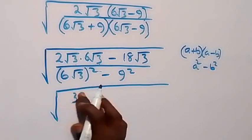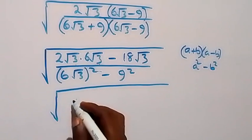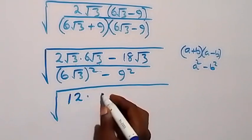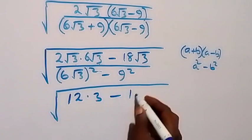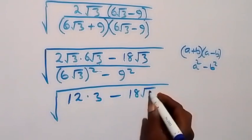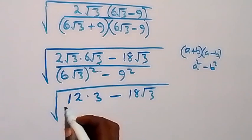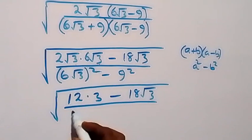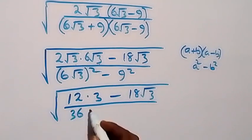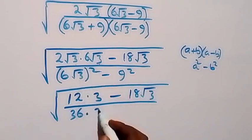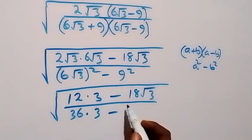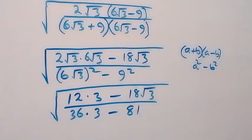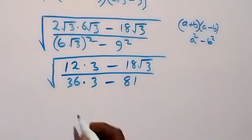We also have 12 times 3 then minus 18 root 3 from here, divided by what we have. The 6 squared gives 36, and with 3 — root 3 squared is just 3 — then minus 9 squared, which is simply 81. And next we have the square root of the numerator.